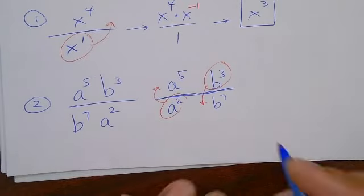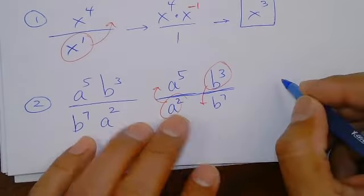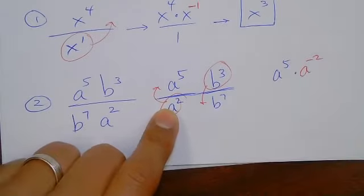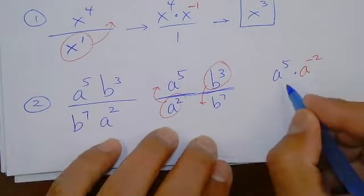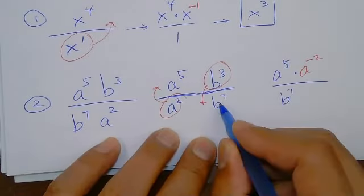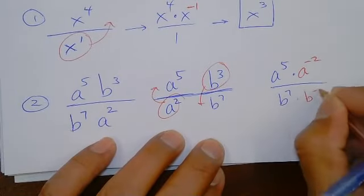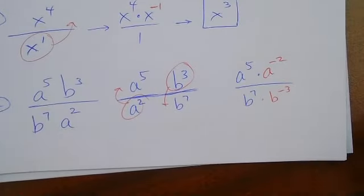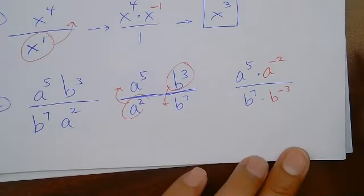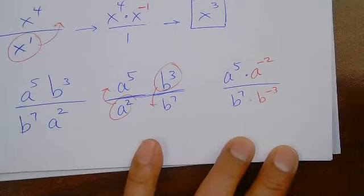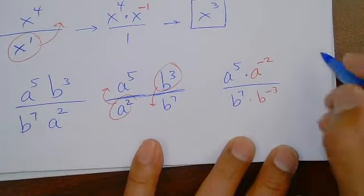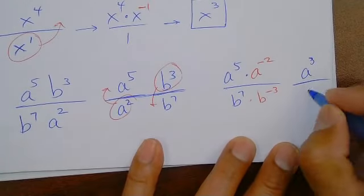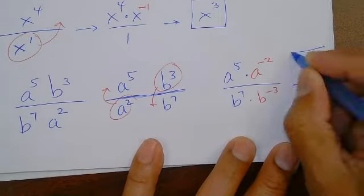There is a quotient rule I haven't shown you, but we're not doing it. So up here you have A⁵ and A to the negative 2 — because you moved it up — and then B⁷ was already there with B to the negative 3. The answer: 5 minus 2 is A cubed, and 7 minus 3 is B⁴, giving A³ over B⁴.